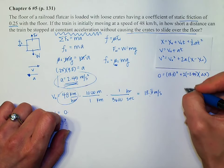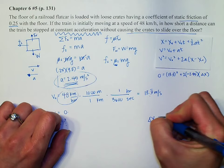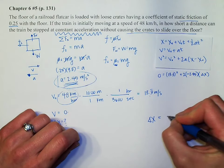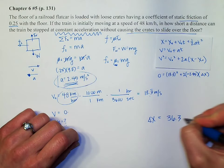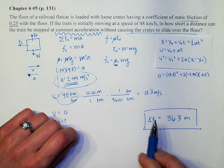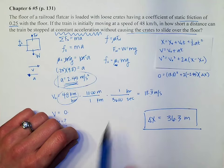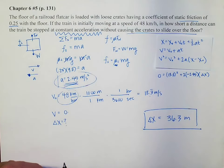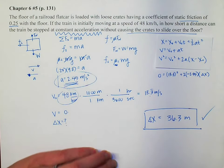And so if I solve this, I will find out that the change in my position is 36.3 meters. So that is how short a distance my train can be stopped at this constant acceleration. And we're done.